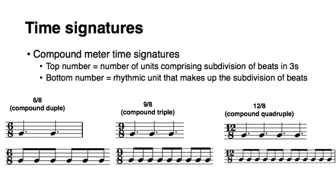Like in simple meter, then, there are duple, triple, and quadruple compound meters. But the numbers in their time signature mean something slightly different than it would in simple meter. There, we learned that the top number was the number of beats, and the bottom number was the rhythmic unit that represented the beat. Like 2/4 means 2 quarter notes per measure. In compound meters, the top number represents the number of rhythmic units that comprise the subdivision of the beat into three parts.